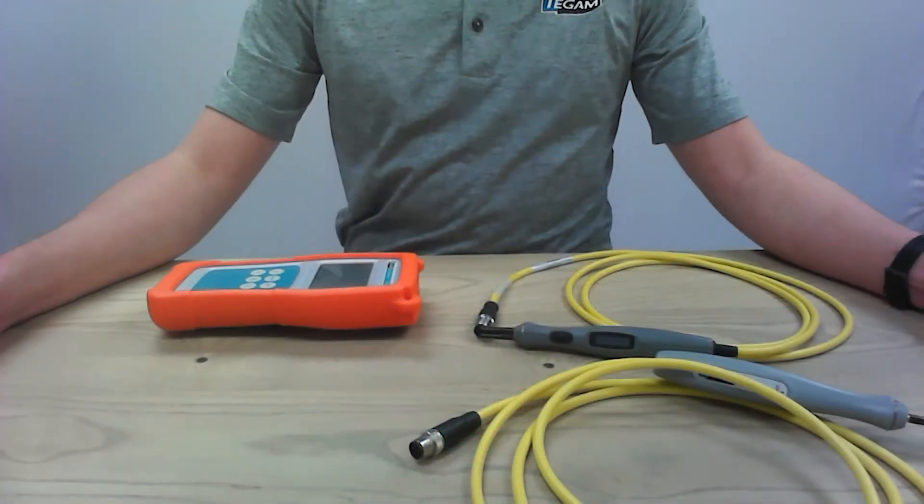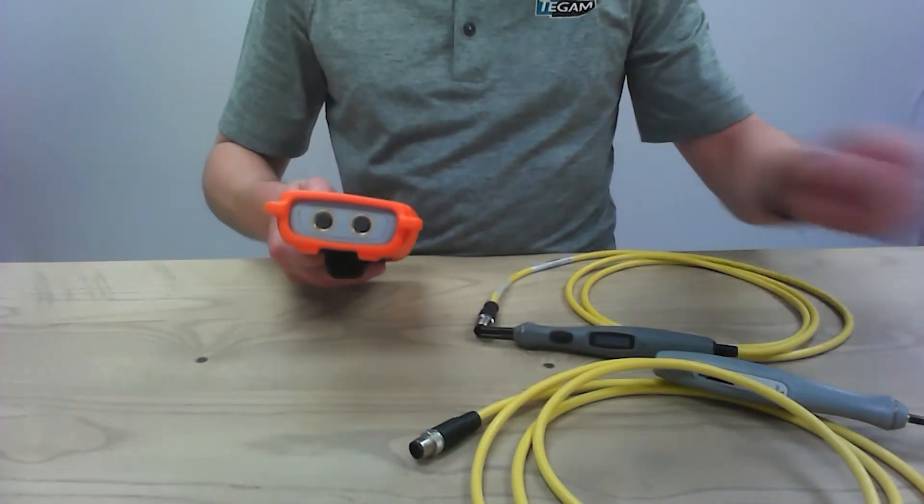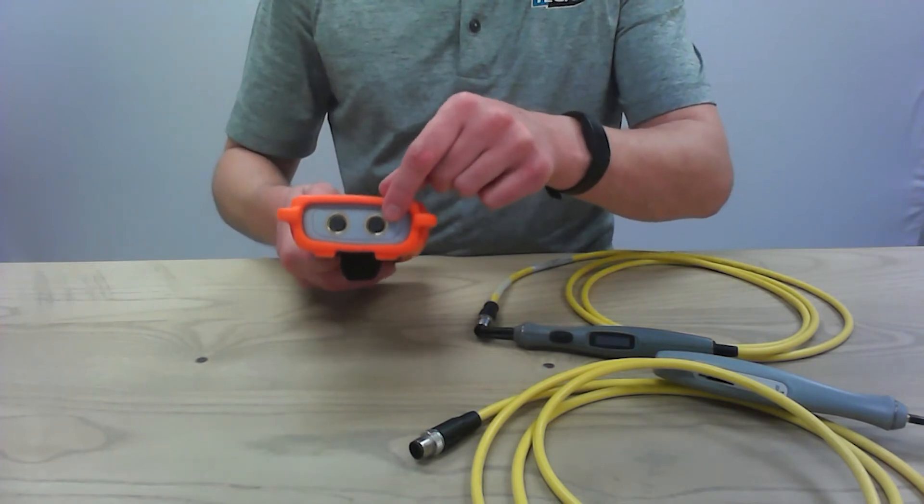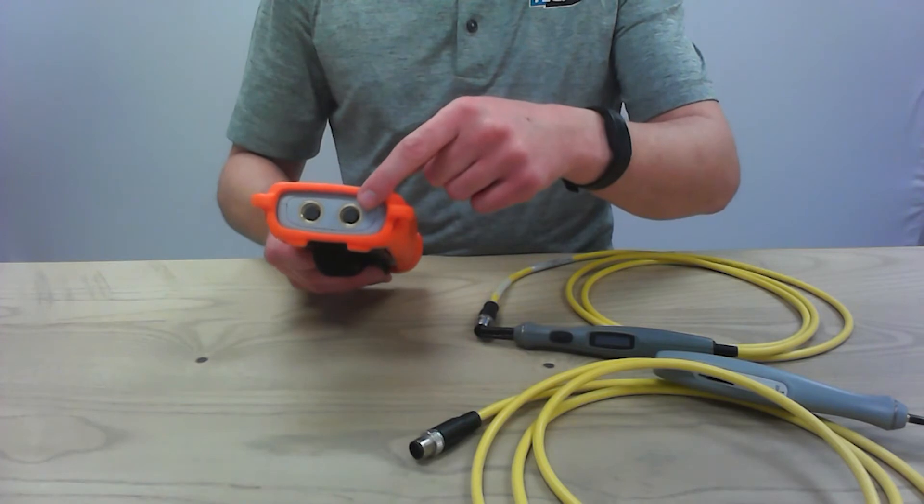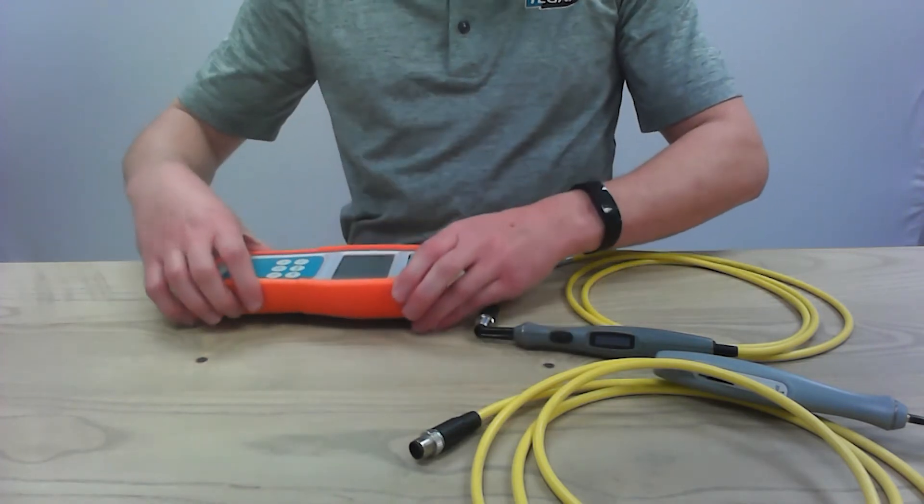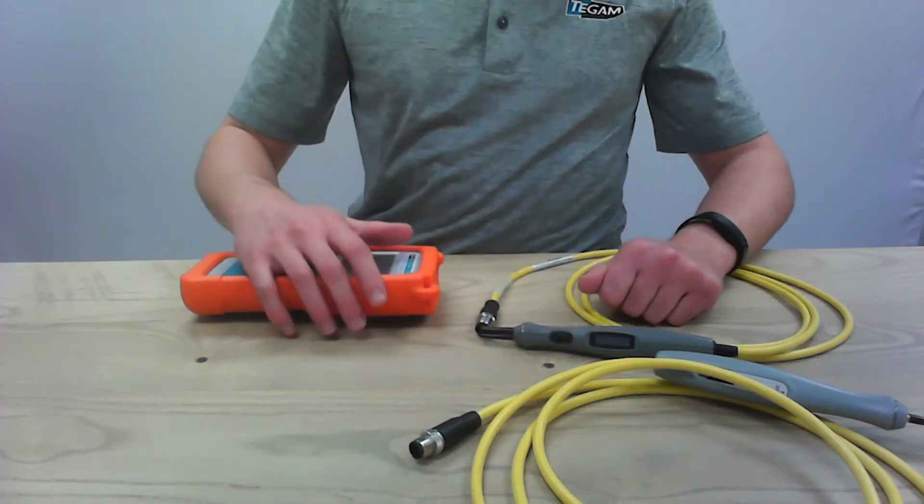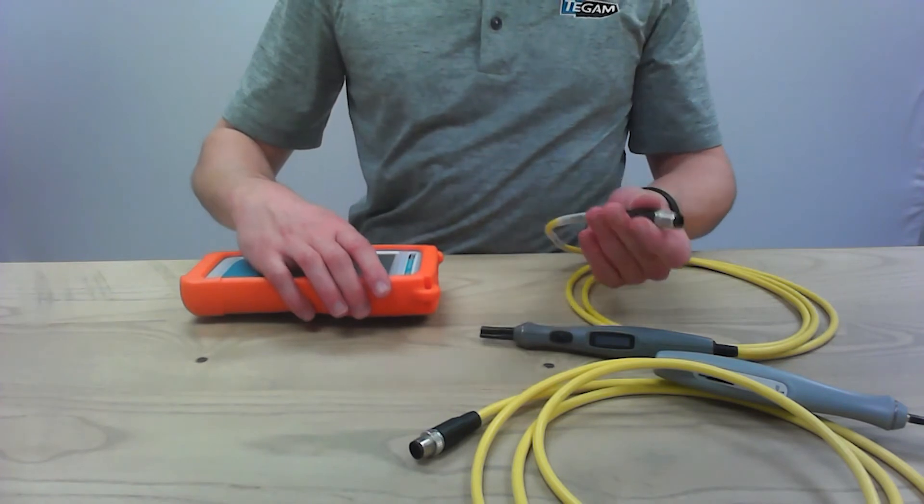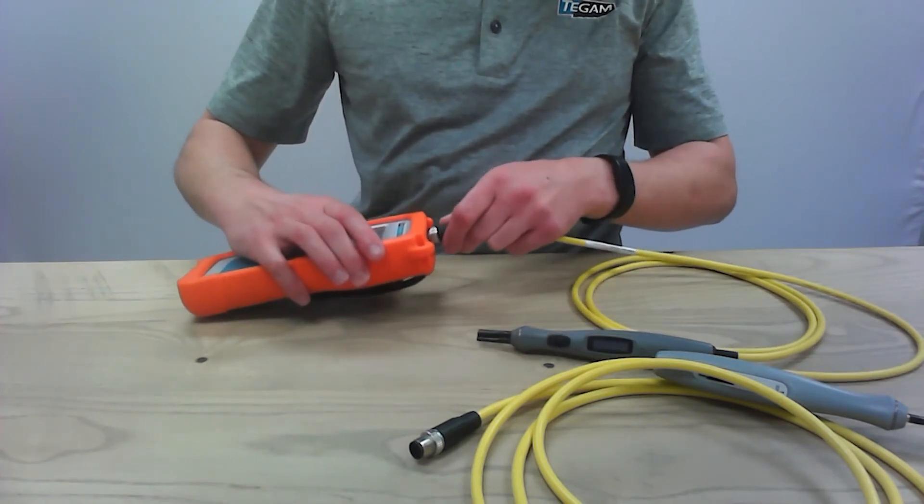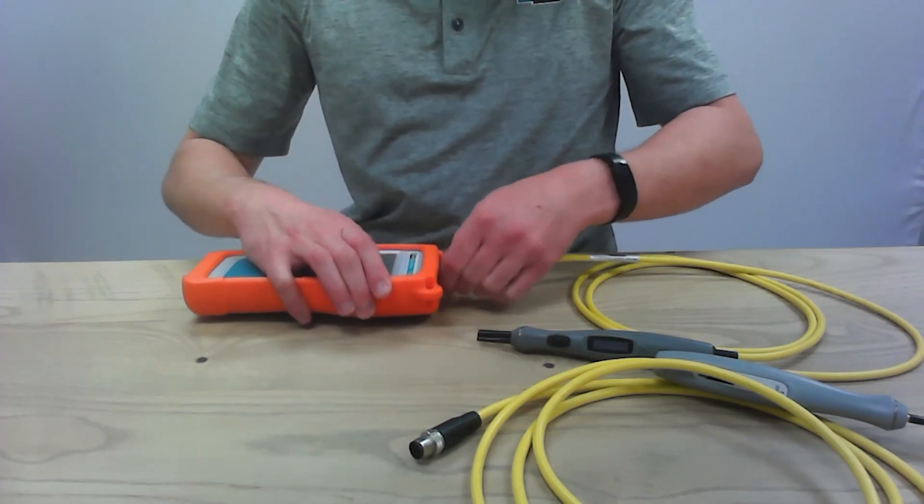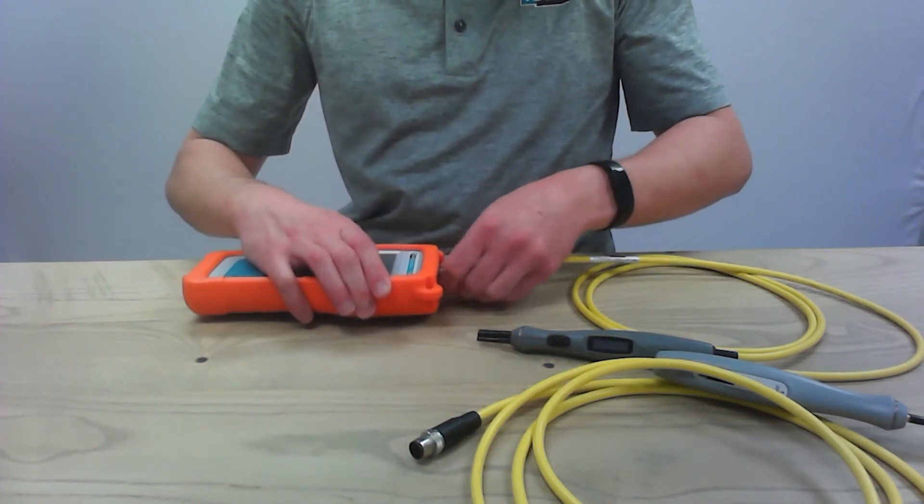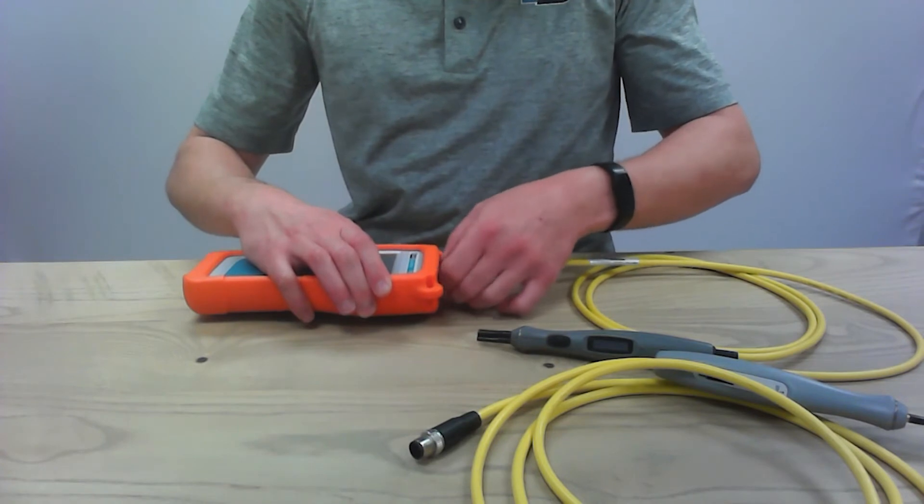To connect the display probe to the unit, first make sure that you're plugging it into channel one. Channel one is on the left-hand side when you're looking straight on from the unit. Turn the unit off if it's not already, and then take the display probe connector, line it up with the tab, push, and then screw the threaded leads into the connection.